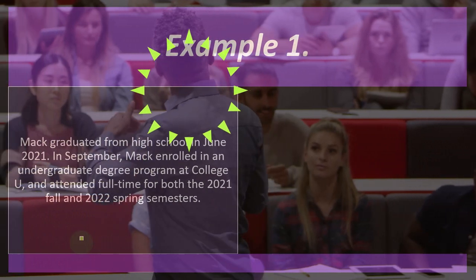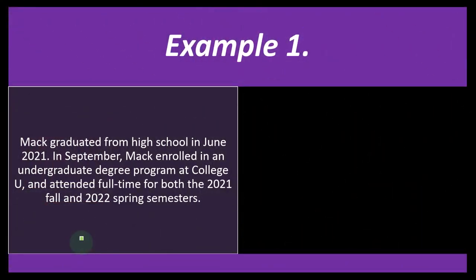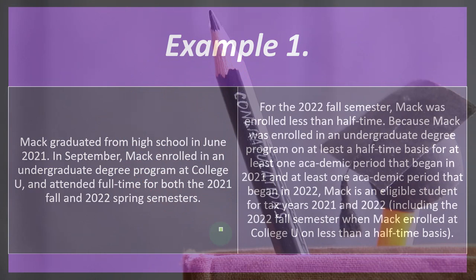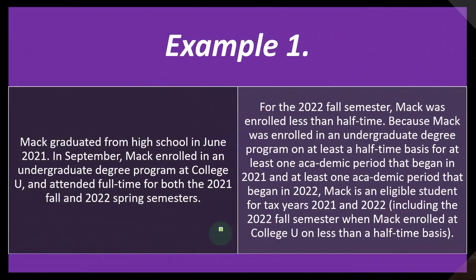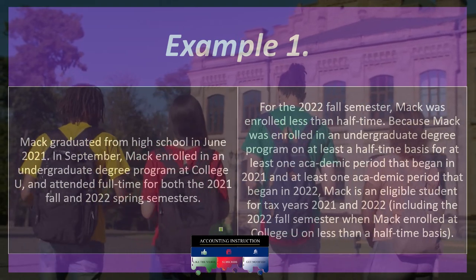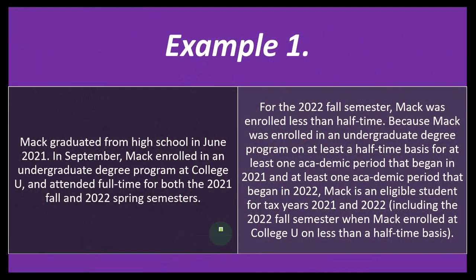Example one: Mac graduated from high school in June 2021. In September, Mac enrolled in an undergraduate degree program at College U and attended full-time for both the 2021 fall and 2022 spring semesters. For the 2022 fall semester, Mac was enrolled less than half-time. Because Mac was enrolled in an undergraduate degree program on at least a half-time basis for at least one academic period beginning in 2021 and one beginning in 2022, Mac is an eligible student for tax years 2021 and 2022, including the 2022 fall semester when enrolled less than half-time.